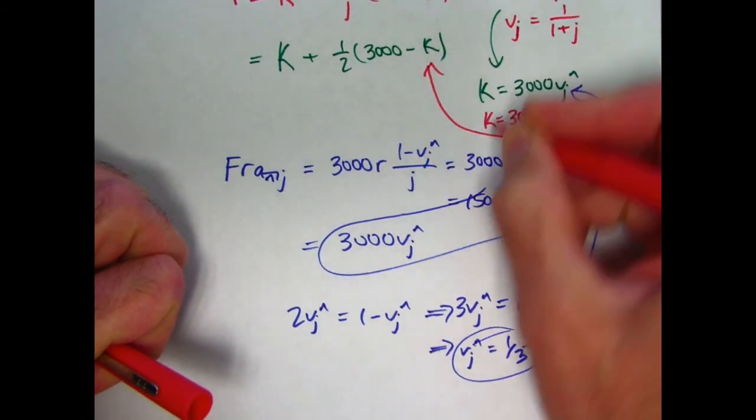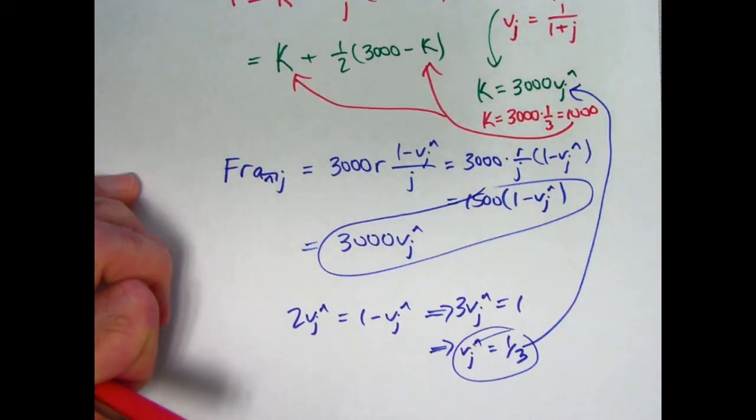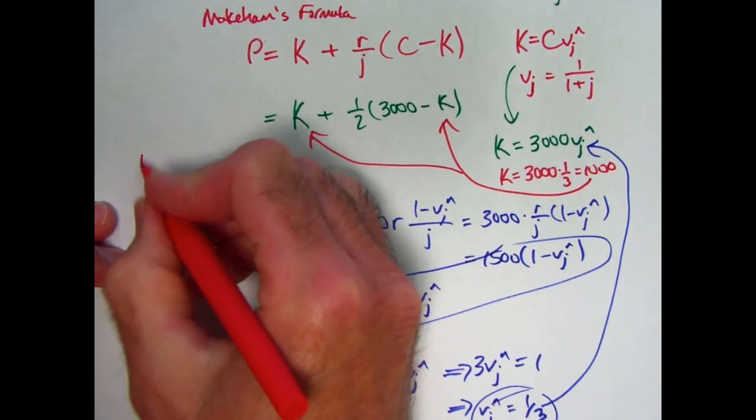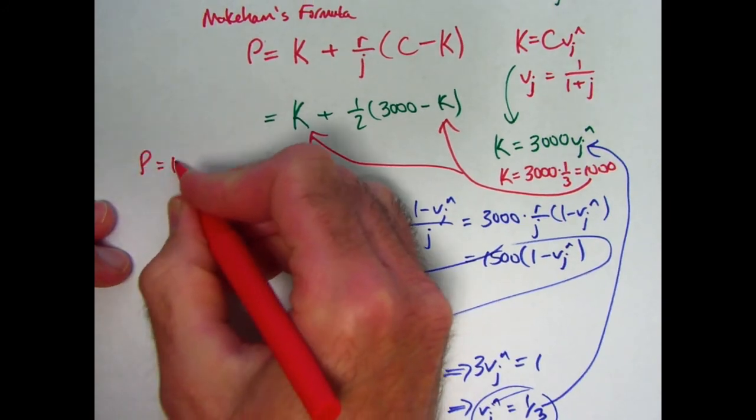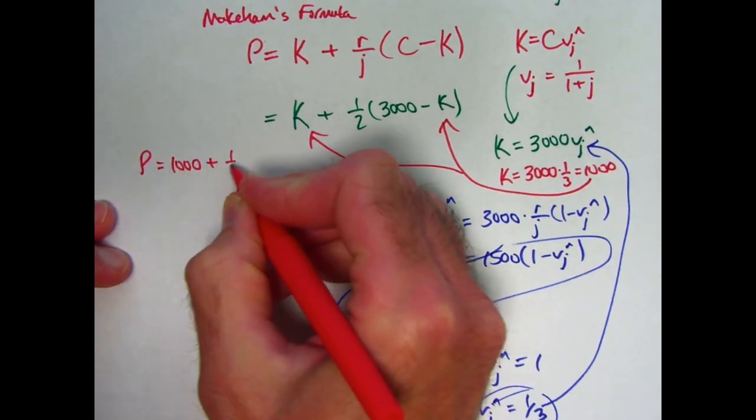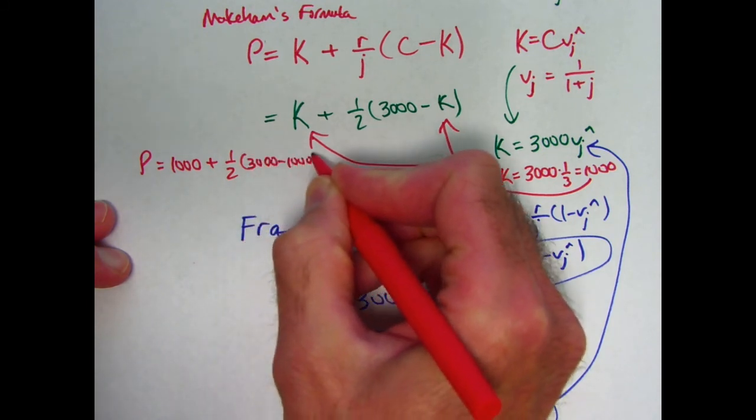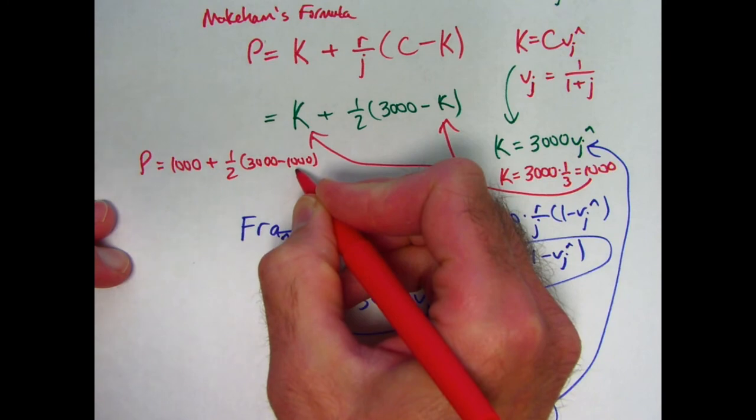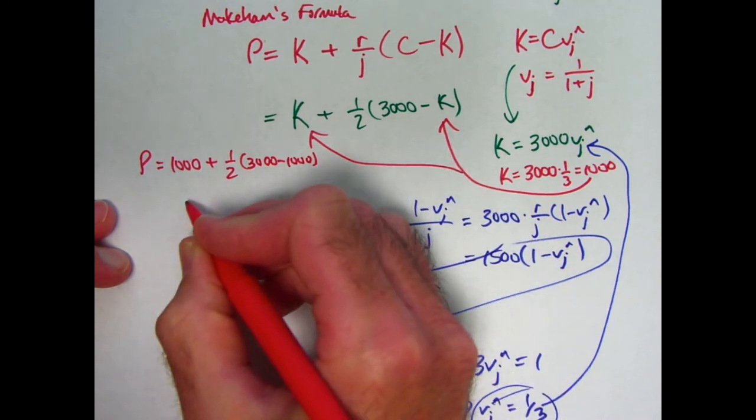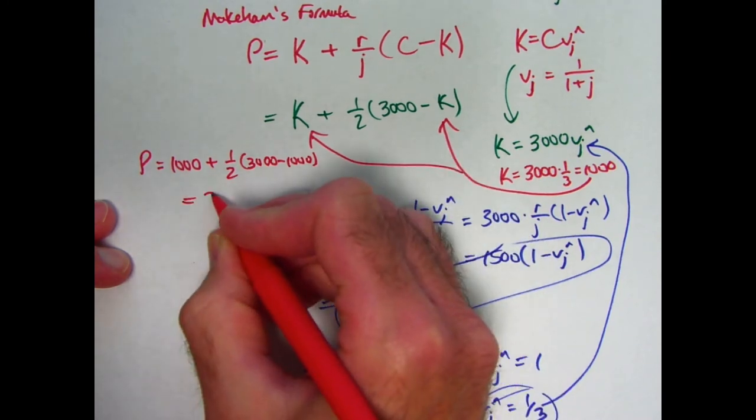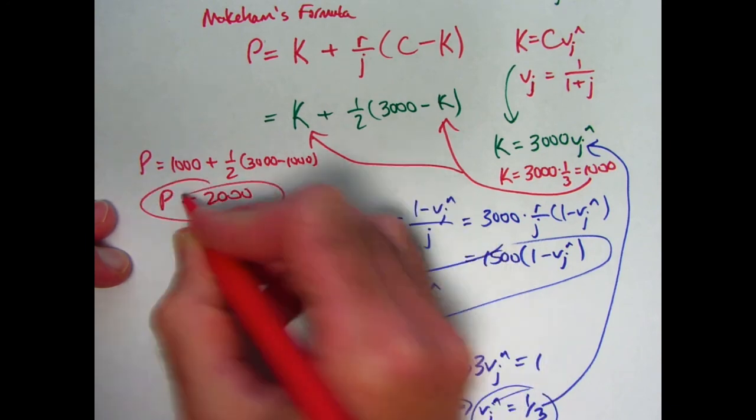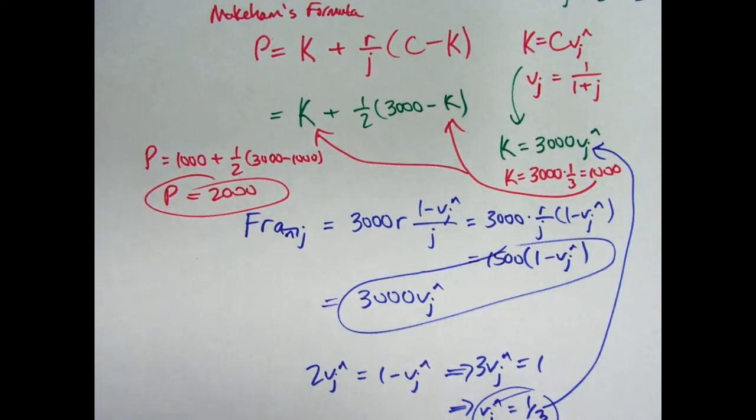And now we can substitute that in here and here to get the final answer for the price. The price is going to be 1,000 plus 1 half times 3,000 minus 1,000. That's 2,000. 2,000 times 1 half is 1,000. 1,000 plus 1,000 is 2,000. The final answer for the price, the selling price is 2,000.